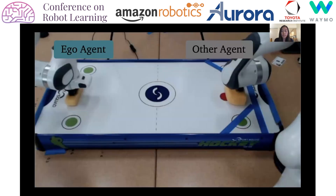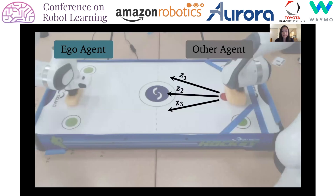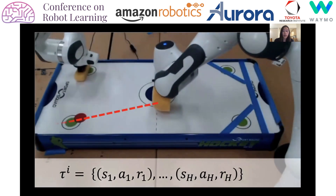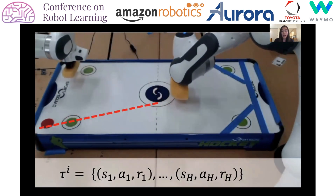For example, consider two robots playing air hockey. The ego agent is a reinforcement learning robot tasked with blocking the incoming shots, while the other agent is a role-based robot that dynamically changes its strategy. Its different strategies correspond to aiming in different directions. We define an interaction to be the sequence of states, actions, and rewards of the ego agent.